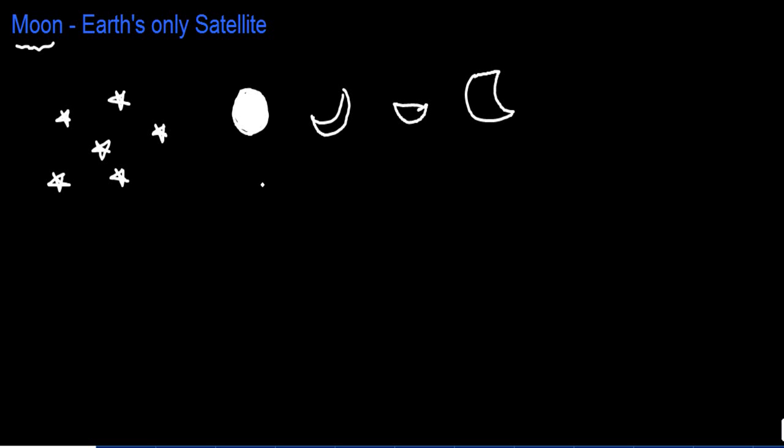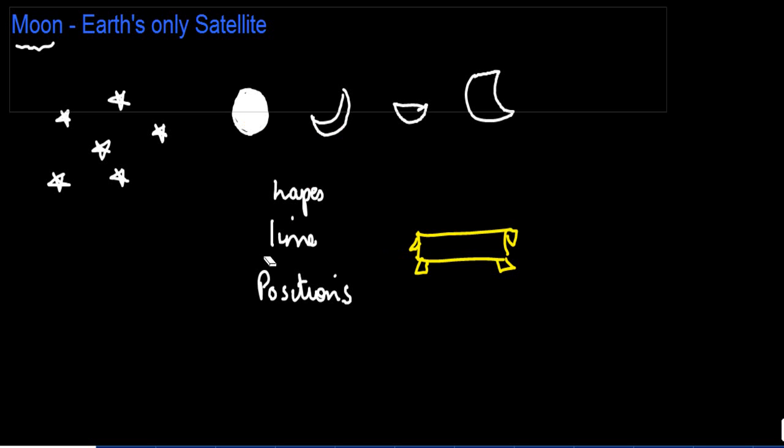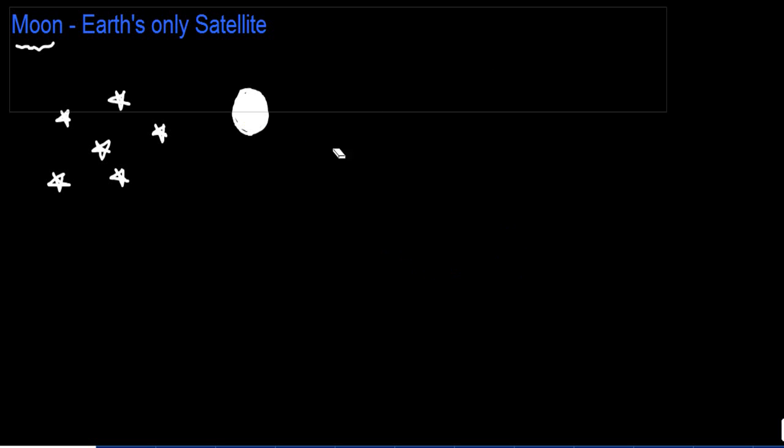The shapes are different, the time at which it comes up is also different. The positions, if you notice, are also different. So if you are just sitting on a bench, you would notice that the moon is not always at one place in the sky. It keeps on changing its position on different days. So let us first understand what exactly is this moon all about.